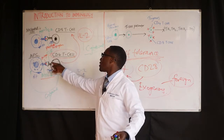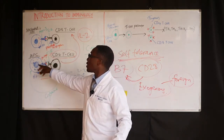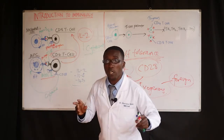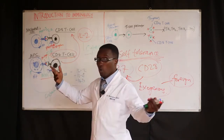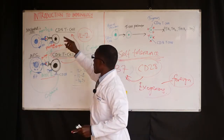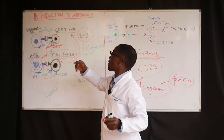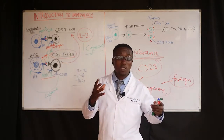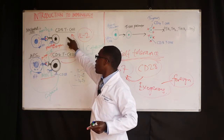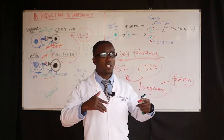Likewise, if the CD4 cells have been depleted, it means the APCs will not be activated — they will keep active, but they will not be easily activated to fight the enemy. The same applies to dendritic cells and CD8 cells, which at some point need to be activated by cytokines from the CD4 cells.